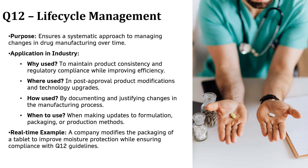ICH Q12, Technical and Regulatory Considerations for Pharmaceutical Product Lifecycle Management, is all about handling changes in drug manufacturing efficiently while maintaining product quality and regulatory compliance. Over time, manufacturing technologies evolve, new formulations are developed and packaging materials improve. Making these changes without disrupting drug quality and safety requires a structured approach — that's exactly what ICH Q12 helps with. For example, a pharma company updates its tablet packaging to better protect against moisture, reducing the risk of degradation in humid regions. By following ICH Q12, they ensure the changes meet regulatory requirements while maintaining product quality and patient safety. ICH Q12 helps pharma companies adapt to advancements without compromising drug quality.